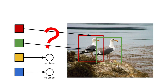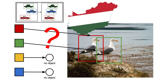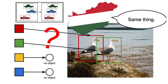Now we have the predicted bounding boxes and the class probabilities. The DETR model needs to assign them to their corresponding ground-truth objects so it knows how to compute the loss. This is done by using the Hungarian algorithm, which we touched on in the previous video. The same logic can be applied here to match the predicted bounding boxes to their corresponding ground-truth based on their intersection over union and the predicted class label.